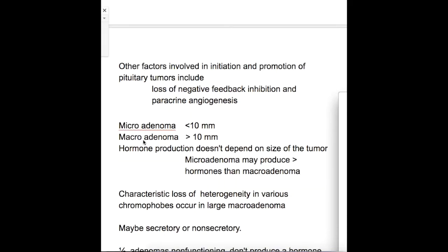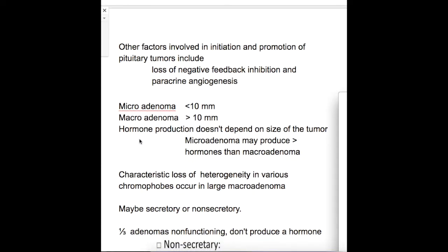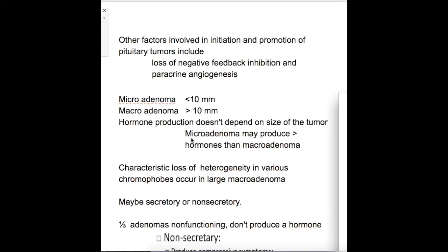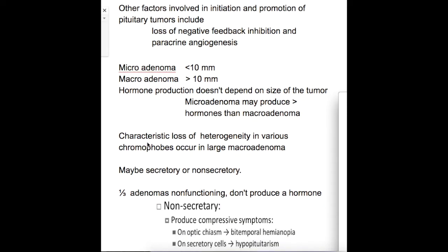A tumor less than 10 mm in diameter is a microadenoma, and more than 10 mm is a macroadenoma. Hormone production does not depend on the size of the tumor — a microadenoma may produce more hormones than a macroadenoma. There is characteristic loss of heterogeneity in various chromophobes that occurs in large macroadenomas.